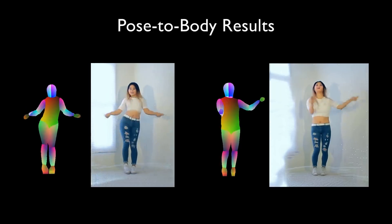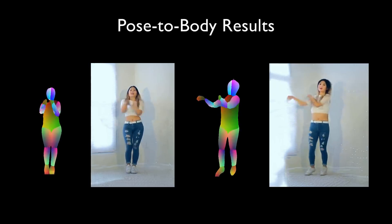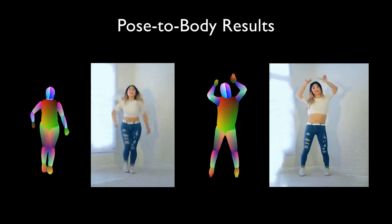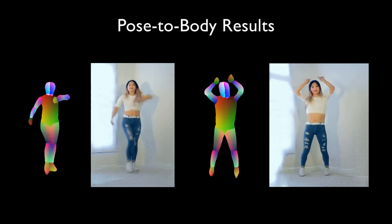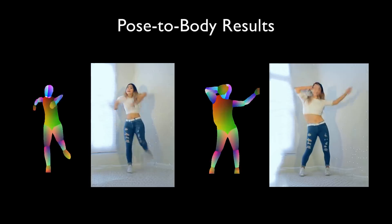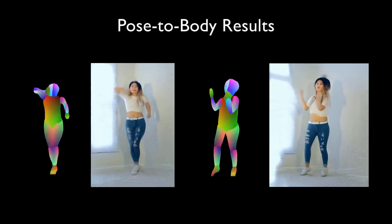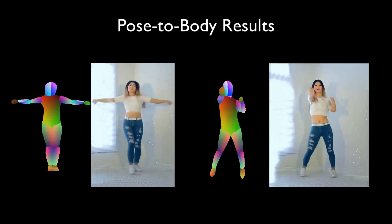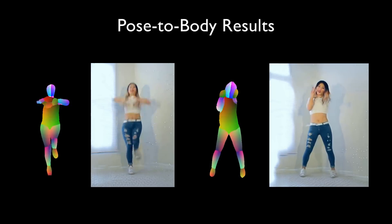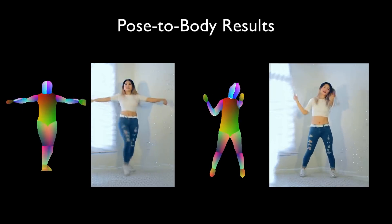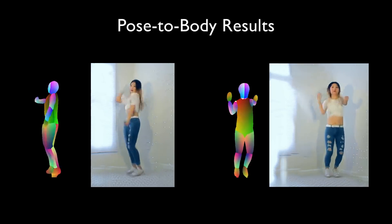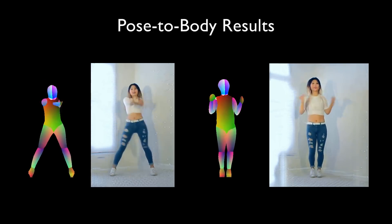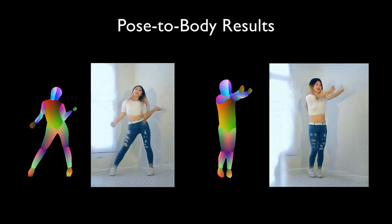Another example: we can synthesize videos of humans moving given pose information. For example, we can generate videos of people dancing. Using estimated poses as an intermediate representation, we can transfer dancing motion from one person to another. Note that even the shadows are consistent with the subject.